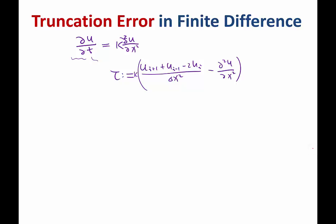This is the error in approximating the PDE — it is not the error in the solution. The error in the solution, which I call E, is the difference between the numerical u_i you obtain minus the analytic solution u evaluated at i·Δx.